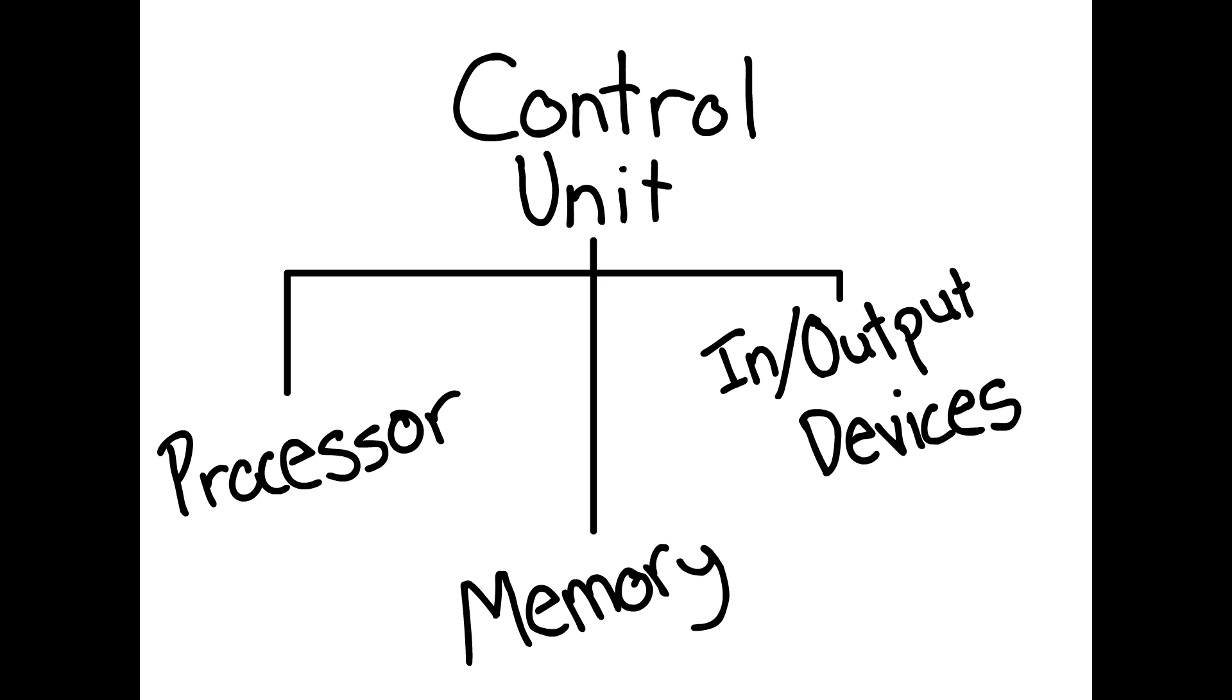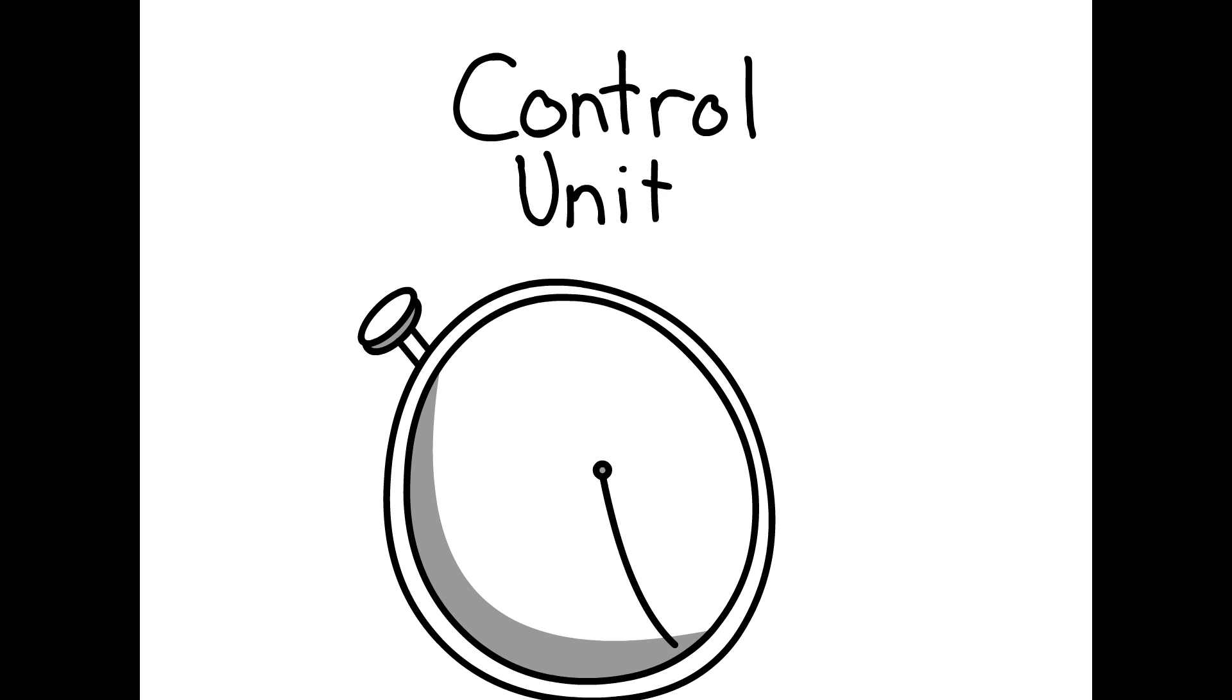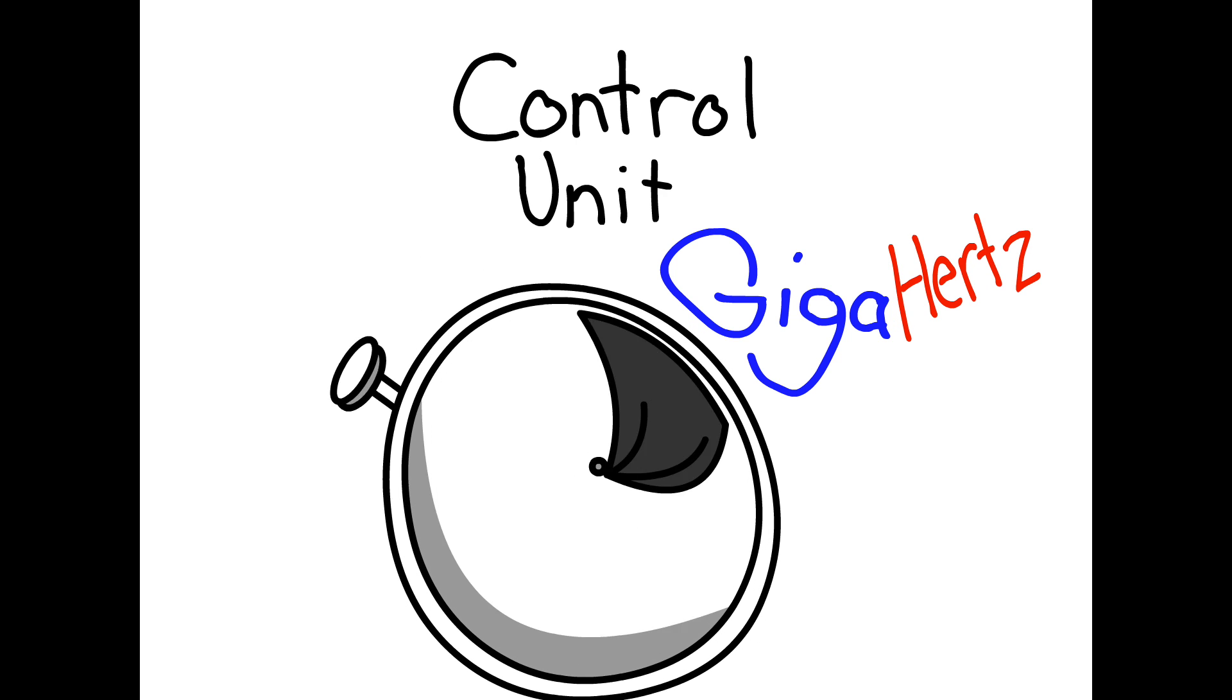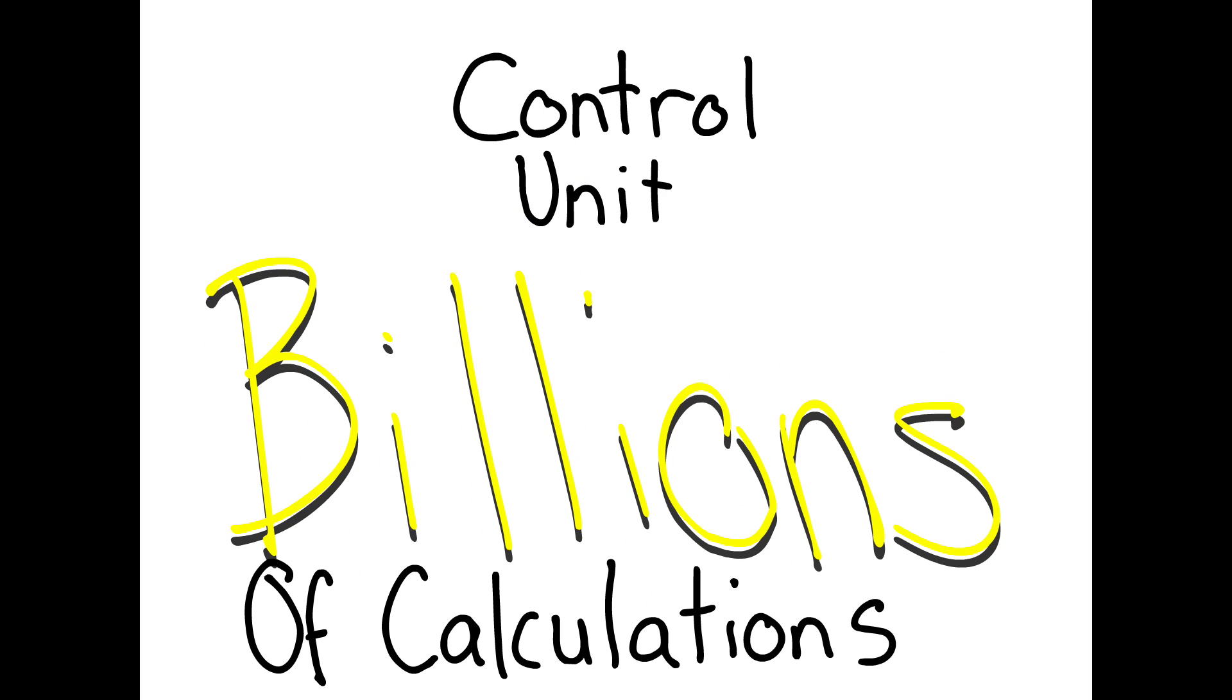The other job of the control unit is to be a timer. Time within computers is measured in Hertz, which refers to cycles per second. Most computers nowadays are measured in gigahertz, which refers to billions of times per second. This means that computers make billions of calculations every second.